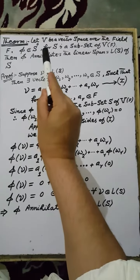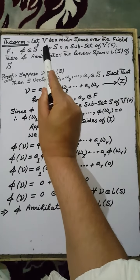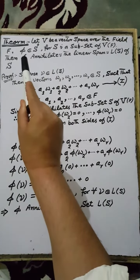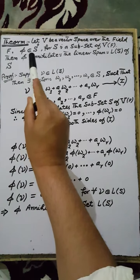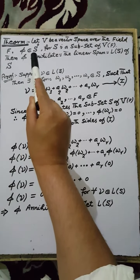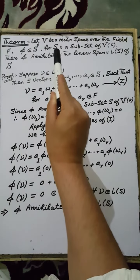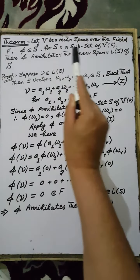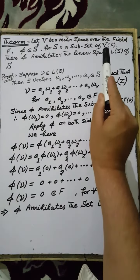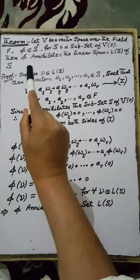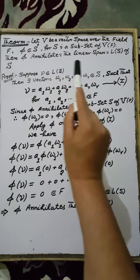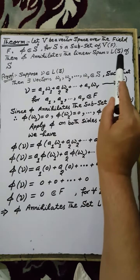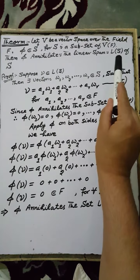Bismillah. Next theorem. Let V be a vector space over the field F. Let Phi be an annihilator of the set S, where the set S is a subset of the vector space V over the field F. Then Phi annihilates the linear spanning set spanned by the set S.